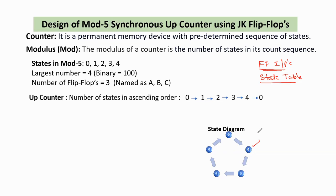To understand this concept, first let us start with the definition of a counter. A counter is a sequential memory device with a predetermined sequence of states. The sequence of states should be stored in a memory device called a counter. The total number of states in the sequence is represented by the mod value. Here the mod value is 5. Modulus indicates the total number of states in a count sequence.